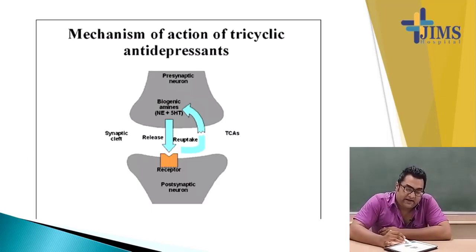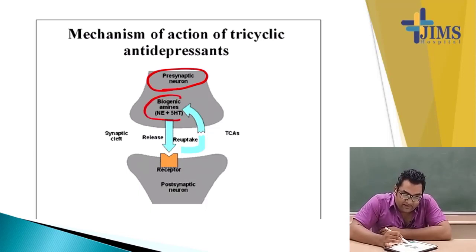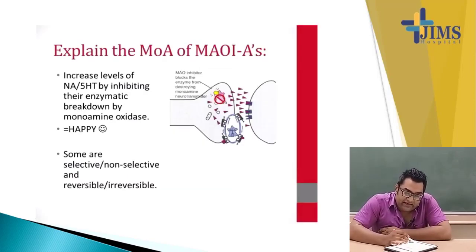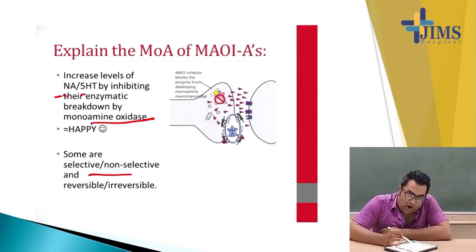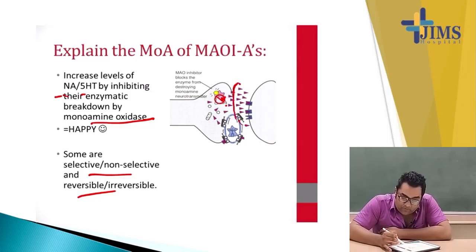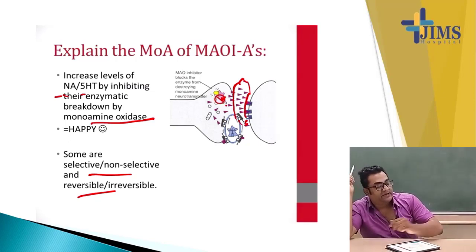The mechanism of action of antidepressants involves presynaptic neurons, biogenic amines at the synaptic cleft and post-synaptic receptors. They increase the level of norepinephrine and serotonin by inhibiting the enzymatic breakdown by monoamine oxidase. Some are selective, some are non-selective, and some are reversible. The MAO inhibitor blocks the enzyme from destroying the monoamine neurotransmitter, resulting in more neurotransmitter in the synaptic cleft, which helps in decreasing depression.